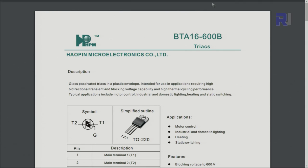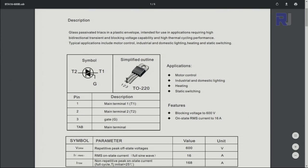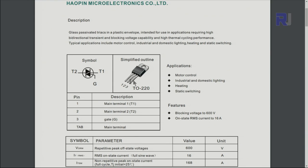Here's a datasheet for BTA16-600B. The pins are from left T1, and then we have T2, and then the last pin is gate. The maximum current that it can handle is 16 ampere, and the blocking voltage is 600 volts.